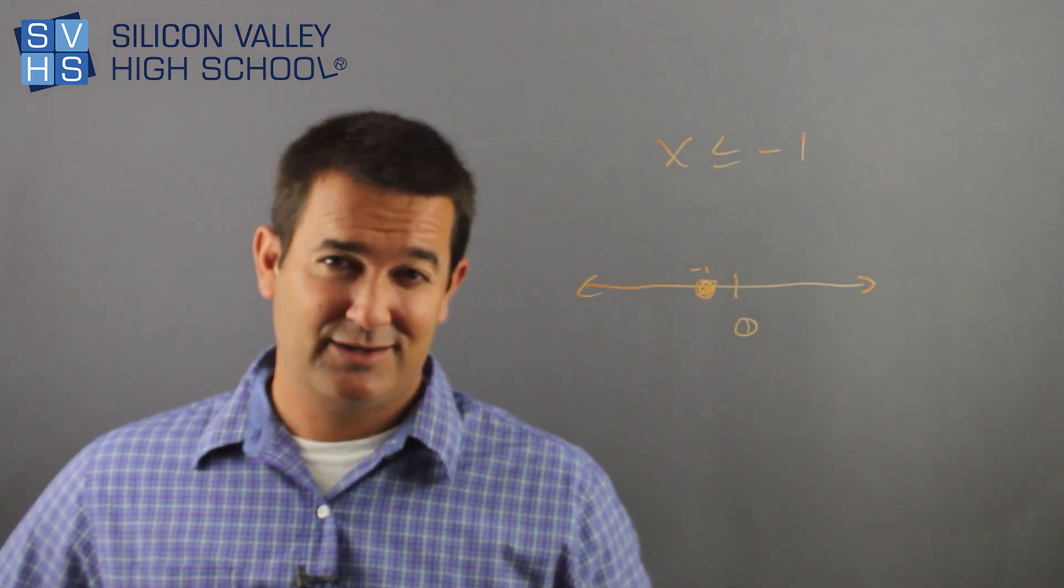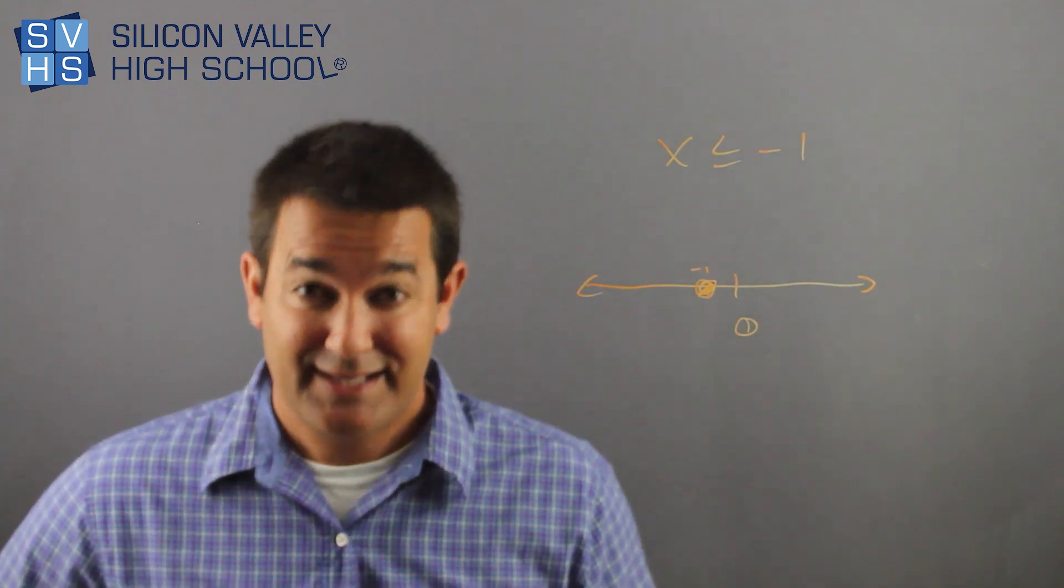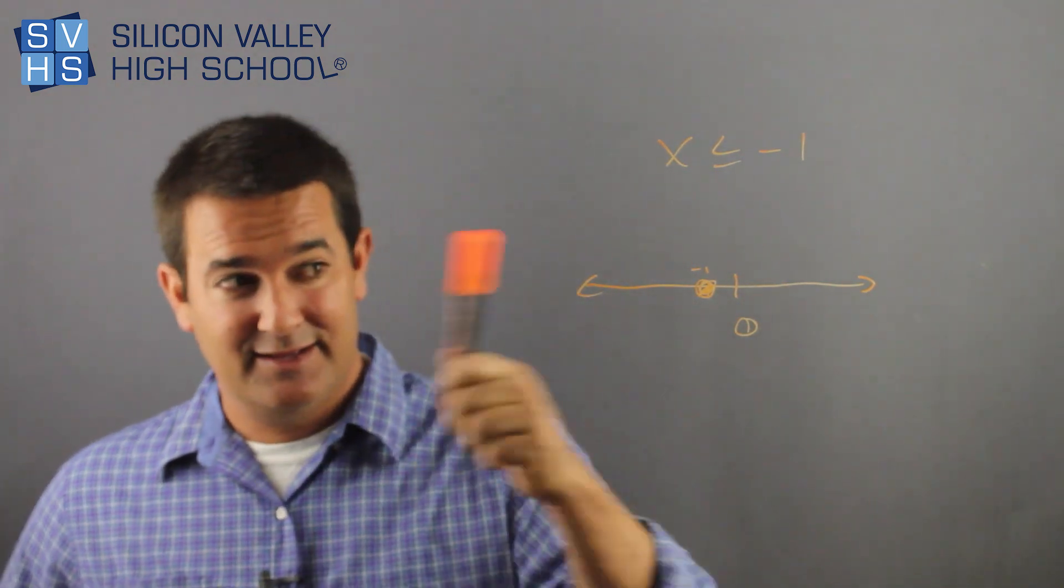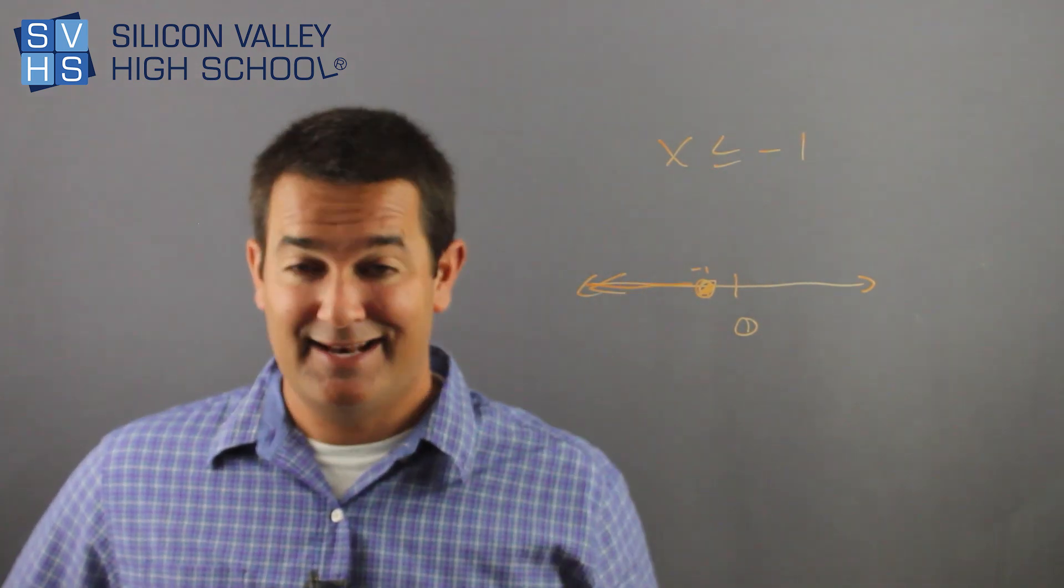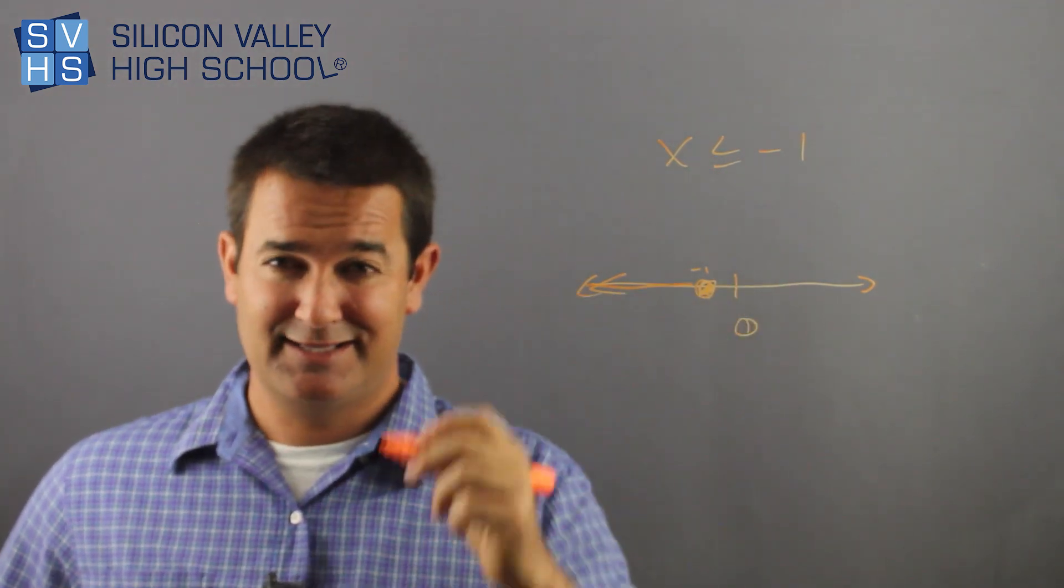Now this, so am I graphing to the right or to the left? This is all values less than or equal to, so this direction. Of course negative a million is less than negative 1, so it's these to the side.